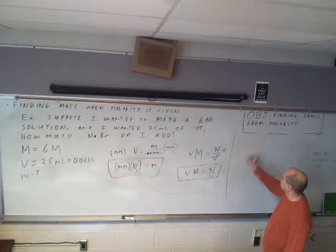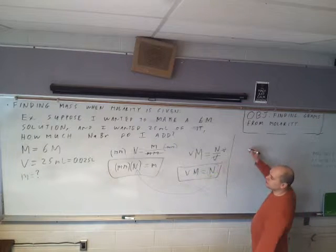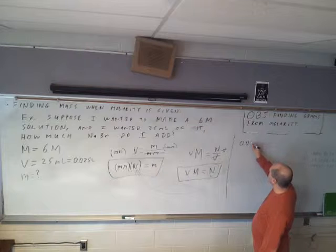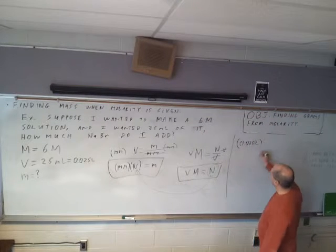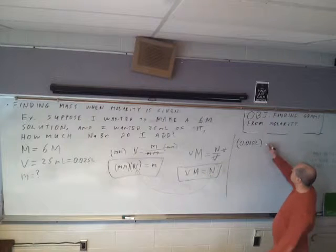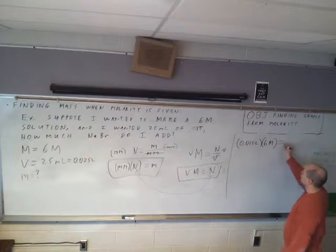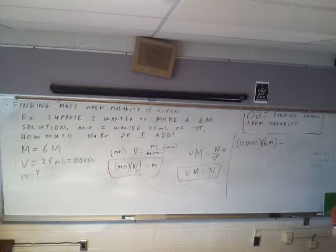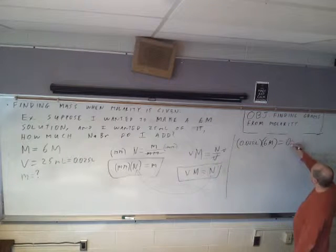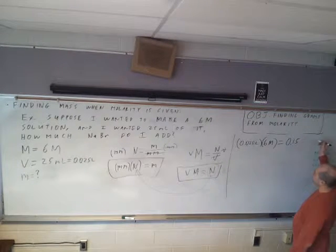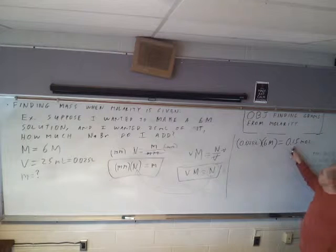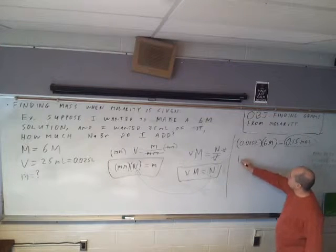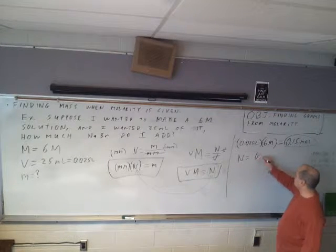So let's do it. Volume is 0.025 liters, times concentration which is 6 molar. Six times 0.025 is 0.15. And that's going to be moles. So now we have N — N equals 0.15 moles.